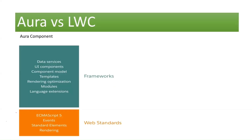Looking at this diagram, we have an orange box calling out web standards and a greenish box that talks about the framework. In order for Salesforce to build the Aura component, it created a framework built on top of the web standards available at that time. On top of those standards, Salesforce had to build a framework to support sophisticated custom user interfaces — covering data services, UI components, the component model, templates, rendering optimization, modules, and language extensions. All of these are part of the framework that came with the Aura component.